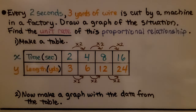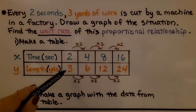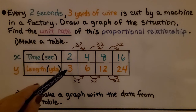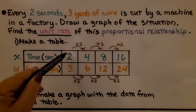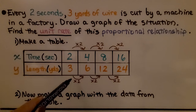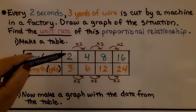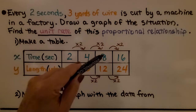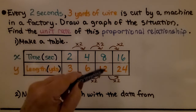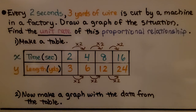First thing we do is make a table. We know the time — two seconds — is three yards of wire, that's the length in yards. If we multiply two times two, we'll get four, and if we multiply three times two, we'll get six. So we have one ordered pair, then another ordered pair. We multiply by two again and get eight and twelve. Now we have another ordered pair, and multiply by two again for one more.